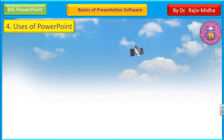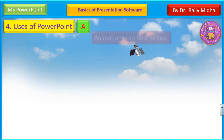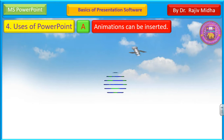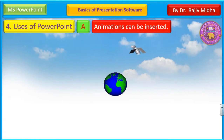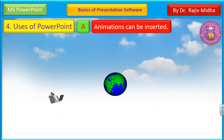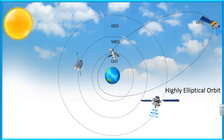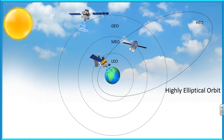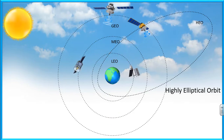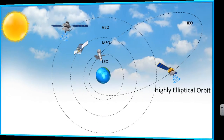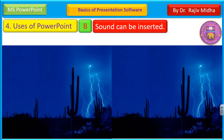Now what are the different uses of PowerPoint? यह हमारी इस particular वीडियो का main मकसद है — मैं आपको PowerPoint के different uses बतलाऊं। The first one is: animation can be inserted. आप अपने सामने एक animation को देख रहे हैं — एक satellite Earth के पास revolve कर रहा है। Similar type of animation can be seen in this particular slide — here a number of satellites are revolving around Earth.